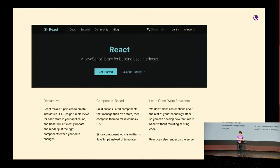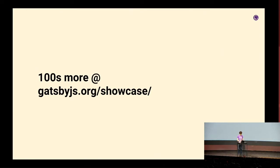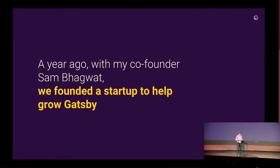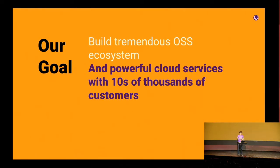Some of them you've probably seen, like the React Docs site is built with Gatsby, and Impossible Foods, which is a meatless meat company. Lots of other sites are built with Gatsby that you can check out in the showcase. A year ago, my co-founder Sam Bagwat and I founded a startup to help continue to grow Gatsby. We wanted to model ourselves after great open source companies like Elastic, Confluent, and HashiCorp. Our goal is to build a tremendous open source ecosystem and complement that with powerful cloud services.